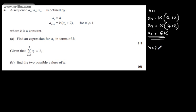When n equals 2, a sub 3 will be equal to k lots of a sub 2 plus 2. Here's our expression for a sub 2, so we can see that a sub 3 is going to be k lots of 6k plus 2.